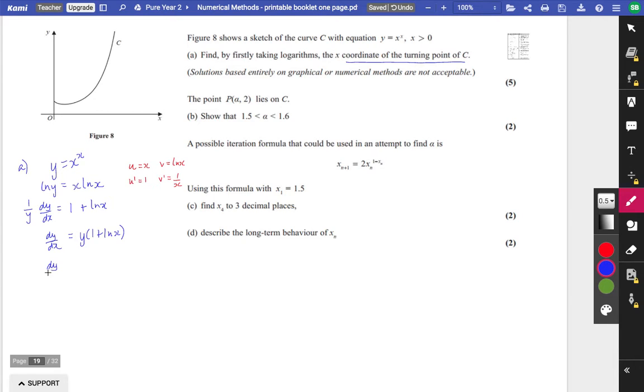So that means we want dy by dx to be equal to 0 for a turning point. So we want y times 1 plus ln x to be equal to 0. So that either means that y is equal to 0, or it means that 1 plus ln x has got to be equal to 0. Now, if you think about it, this can never be equal to 0. So we have that ln x is equal to minus 1. So it looks like x would be e to the minus 1. So x equals e to the minus 1, x equals 0.3679 to 4 decimal places.